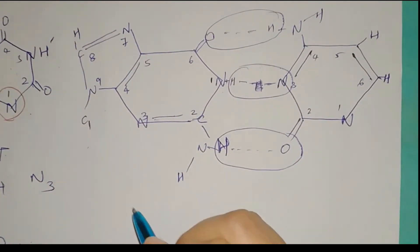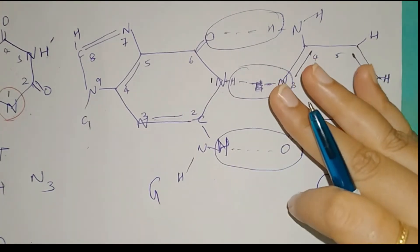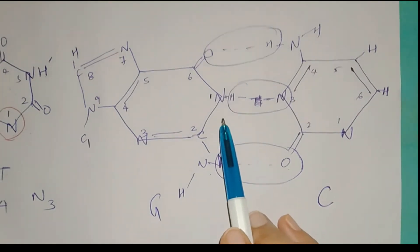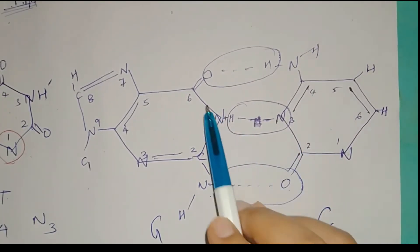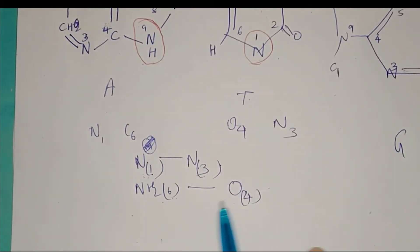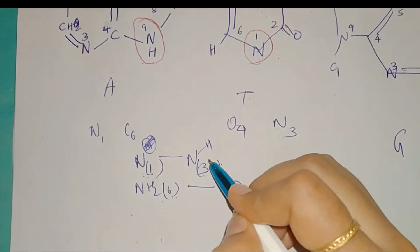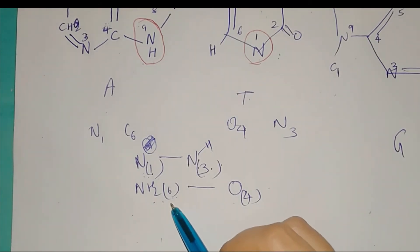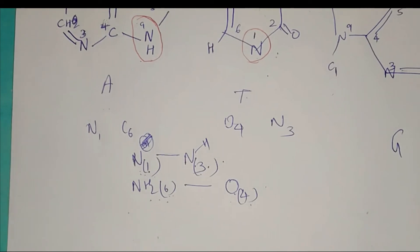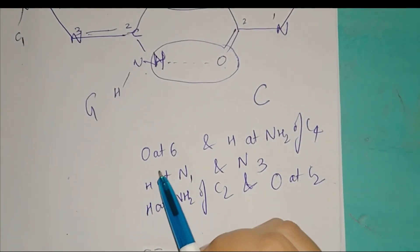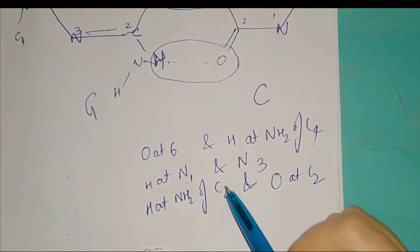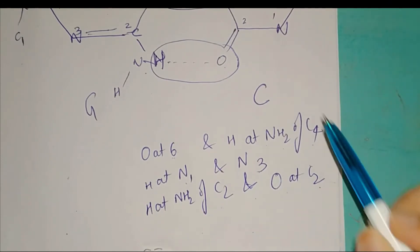Between G and C, three hydrogen bonds are formed: between the NH2 at carbon 2 of guanine and O at carbon 2 of cytosine; between N1 of guanine and N3 of cytosine; and between O at the 6th position of guanine and H of NH2 at carbon 4 of cytosine. So you have to remember these three positions of hydrogen bonding between guanine and cytosine.